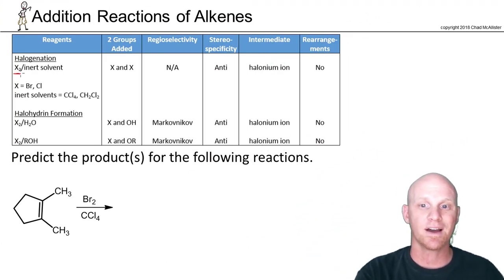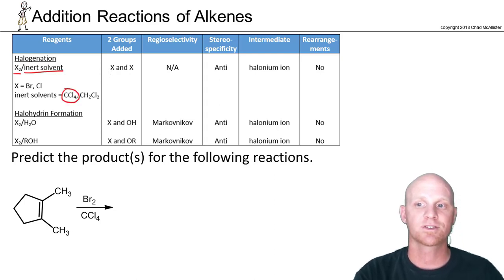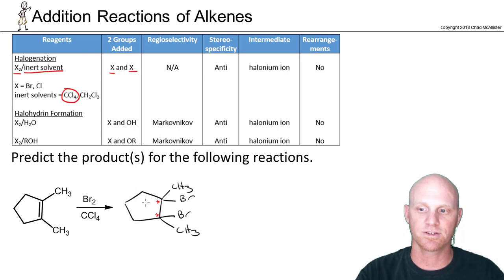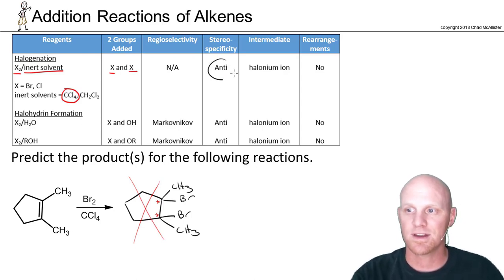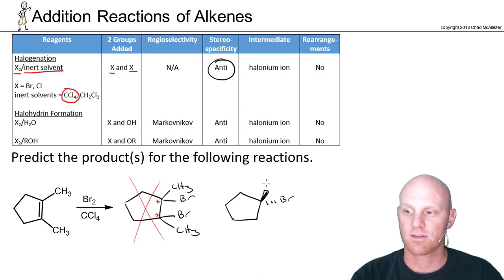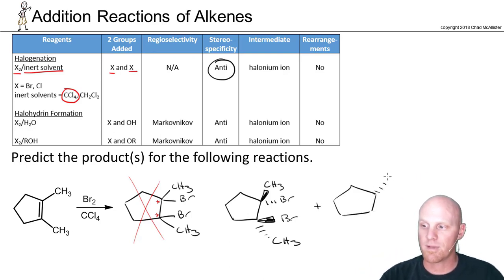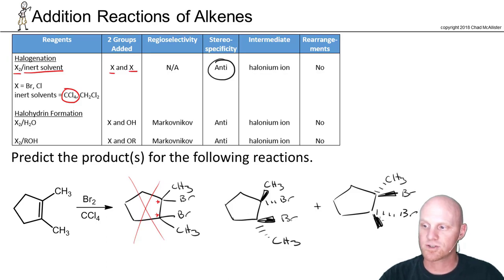Br₂/CCl₄ — that is an example of X₂ with an inert solvent, CCl₄. In this case, we're going to add bromine to both sides. We'll take a look and see if we form any chiral centers. We have a methyl group and bromine on each of the two new sp3 carbons, and they are both chiral centers. So this would not be a sufficient drawing — I need to show stereochemistry. This is anti-addition, so those two bromines add to opposite faces: one is a wedge, one is a dash. Making one bromine a dash means the methyl group is a wedge, and on the other carbon the bromine is on the wedge and the methyl group is on the dash. We'll also get this compound's enantiomer. These are your two anti-addition products.